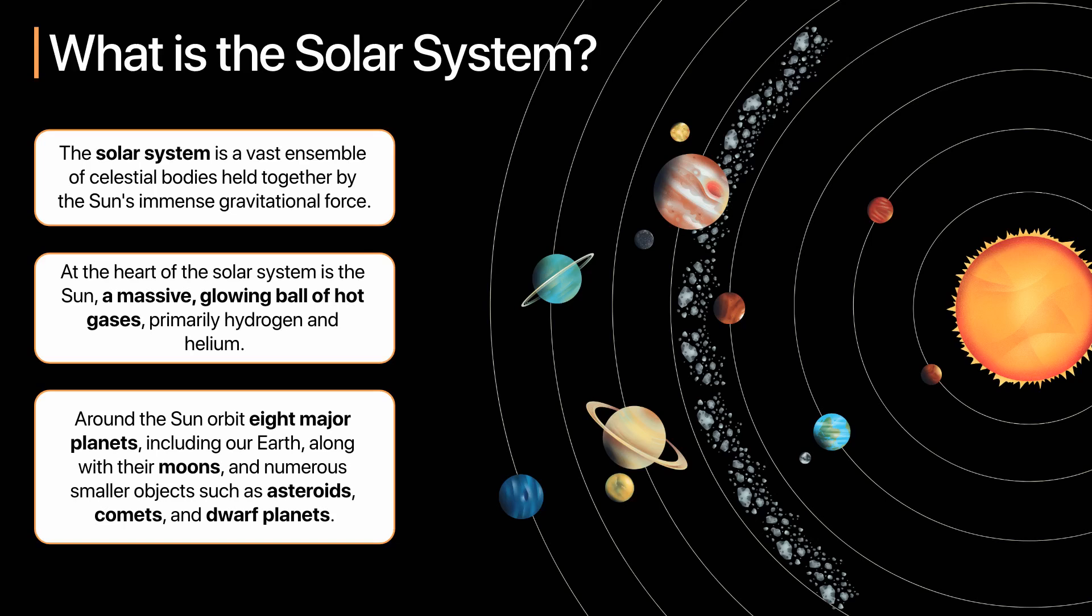Around the Sun orbit eight major planets, including our Earth, along with their moons, and numerous smaller objects such as asteroids, comets and dwarf planets.